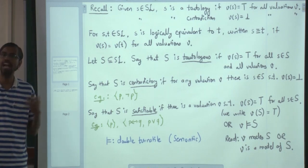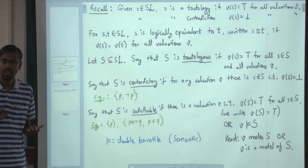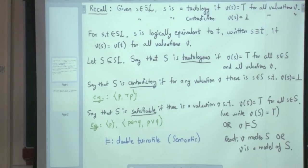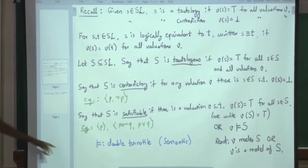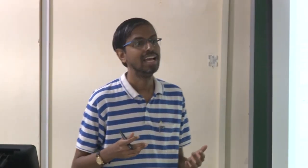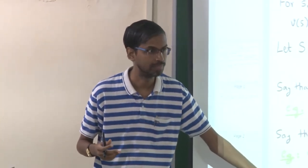Valuations have to do with truth and false, and truth and false are human constructs that humans understand. So the double turnstile is a semantic notion. The single turnstile, which we will see today, is a syntactic construct. The completeness theorem will say that those two are equal.